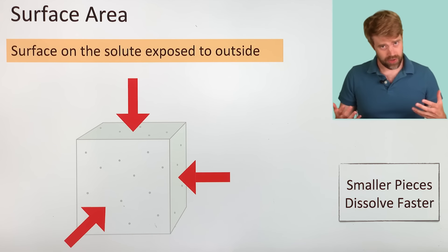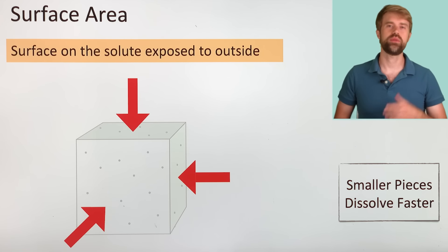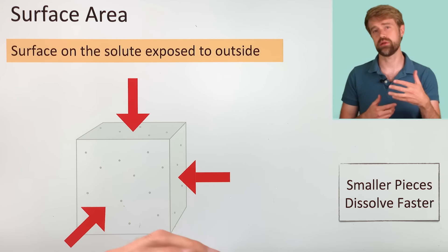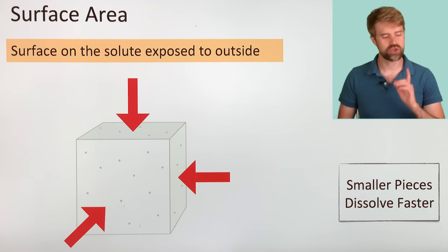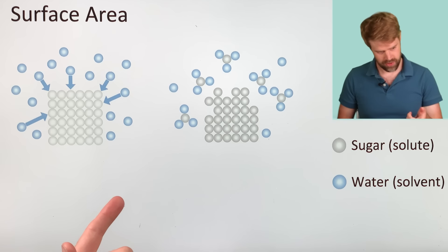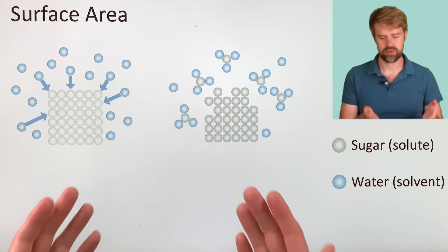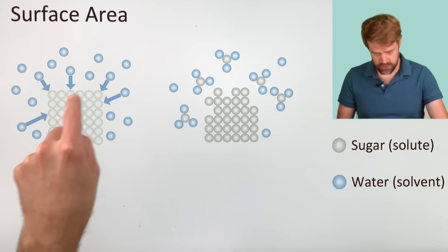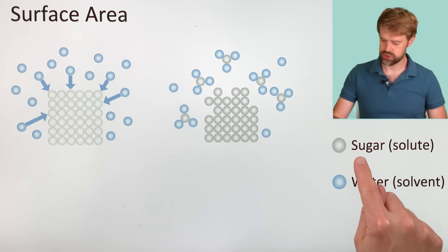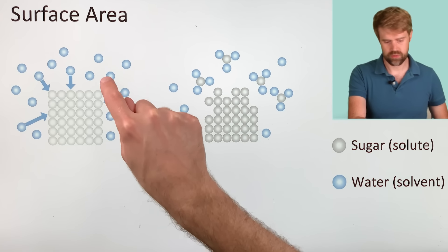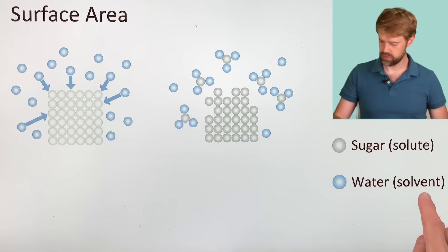This is a 3D diagram, but to make things a little clearer, let's look at a 2D diagram. This shows us an atomic view of the dissolving process. These gray circles represent particles of sugar, which is the solute, and these blue circles represent particles of water, which is the solvent.